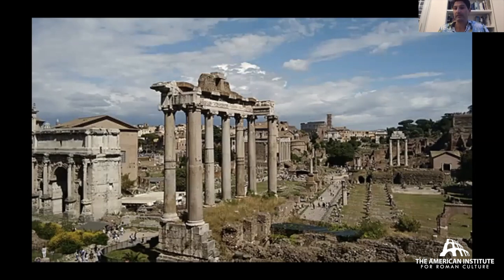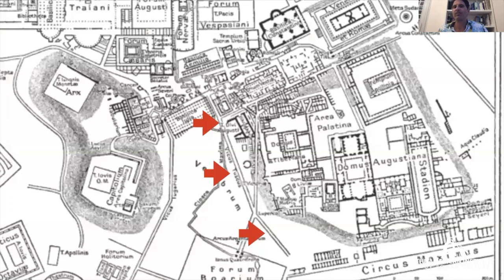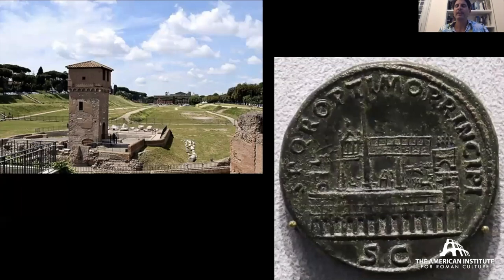When you get to the three columns of the Temple of the Castors, you hang a right — that is where the Vicus Tuscus starts. The Vicus Tuscus gets its name from the Etruscans who lived in that area, like an Etruscan quarter. You can see at the bottom of the Forum plan all the colonnades of the massive Basilica Julia, then you turn right in that space between the Basilica Julia and the Temple of the Castors, beginning the Vicus Tuscus procession. Three arrows connect you along the Vicus Tuscus route, leading to the Circus Maximus.